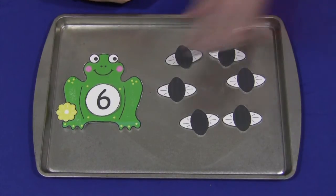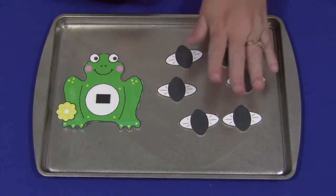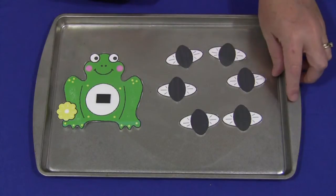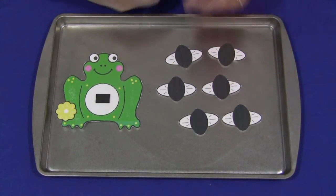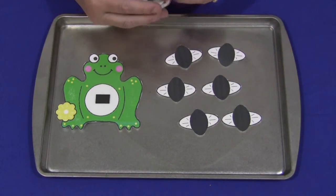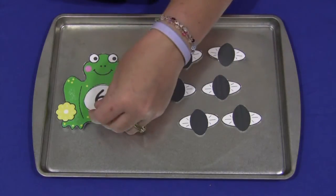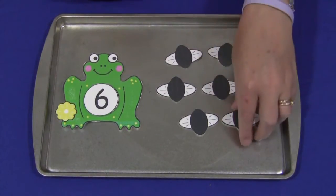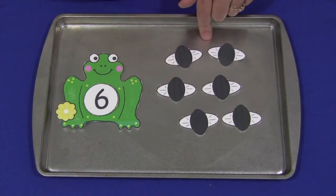Another way to do it is to put a certain number of flies on the cookie sheet, and then the child would need to find the correct number of how many that was and put it on. So you can reverse it if you want. Instead of putting the number on first and then the flies, you can do the flies first and then find the number.